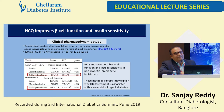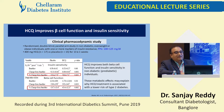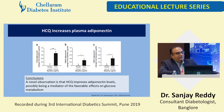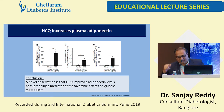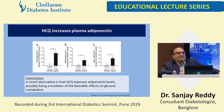Regarding beta cell function and insulin sensitivity — one of the CLAM studies showed that HCQ improves both beta cell function and insulin sensitivity in non-diabetic or pre-diabetic individuals. These metabolic effects may explain why HCQ treatment is associated with a lower risk of type 2 diabetes. One novel observation was an increase in adiponectin levels. Dr. Krishna Sheshadri clearly told us that adiponectin goes down in inflammation — so this increase in adiponectin is a beneficial effect of HCQ.